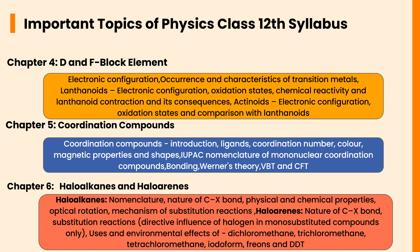In Chapter 4, D and F Block Elements, important topics are electronic configuration, occurrence and characteristics of transition metals, lanthanoids — electronic configuration, oxidation states, chemical reactivity, and lanthanoid contraction and its consequences — actinoids — electronic configuration, oxidation states, and comparison with lanthanoids.